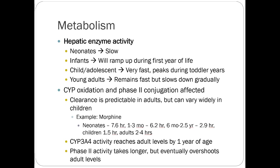Hepatic enzyme activity: neonates generally have slow liver function that ramps up very quickly. Infants will have quite fast metabolism, and up until adolescence metabolism is usually really rapid — kids metabolize things quite a bit faster than adults. Young adults stay kind of high, then it gradually tapers down into the late 20s and early 30s. CYP oxidation and phase 2 conjugation are both hepatic metabolism phases — pretty predictable in adults but vary widely in children. For example, morphine's half-life for a neonate is about 7.6 hours, dropping to 1.5 hours in older children, versus 2–4 hours in adults.